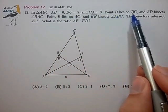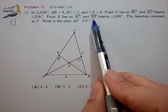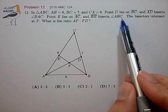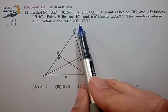Point D lies on BC such that AD bisects angle BAC, and BE bisects angle ABC. The bisectors intersect at F. What is the ratio AF to FD?